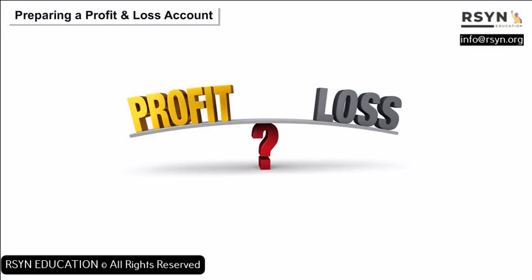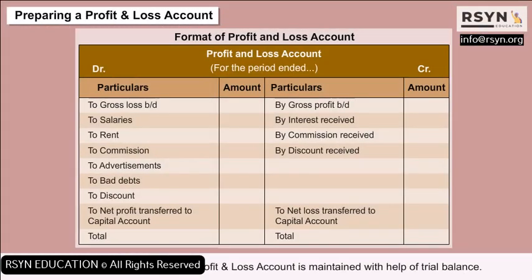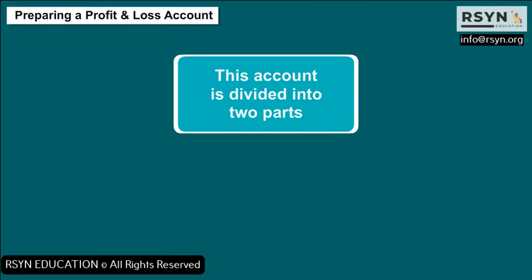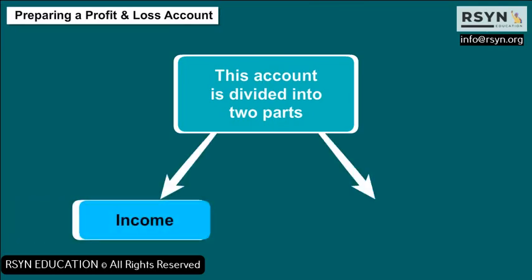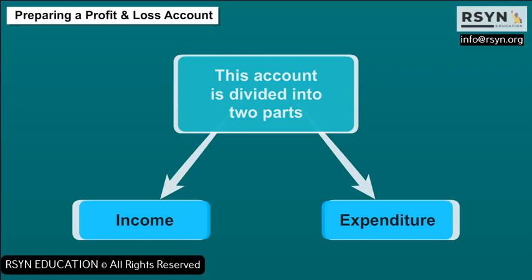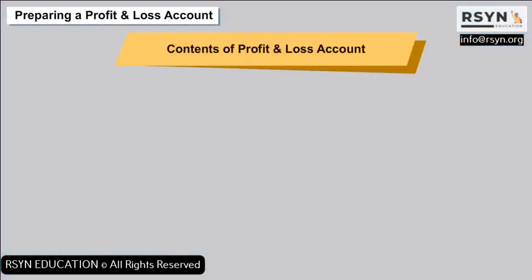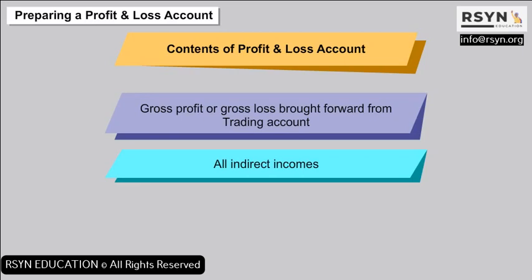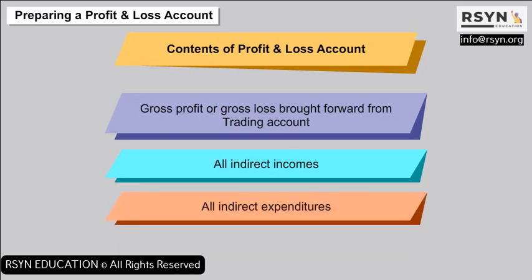Preparing a Profit and Loss Account: Just like the trading account, the profit and loss account is maintained with the help of a trial balance. This account is divided into two parts: income and expenditure. Contents include: gross profit or gross loss brought forward from the trading account, all indirect incomes, all indirect expenditures, and net profit.